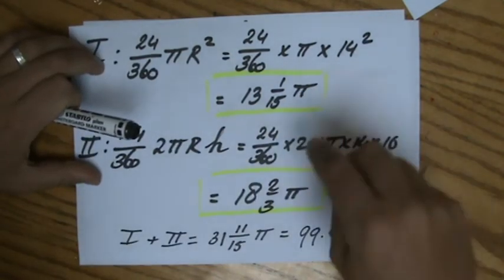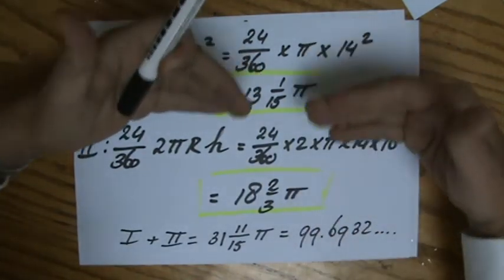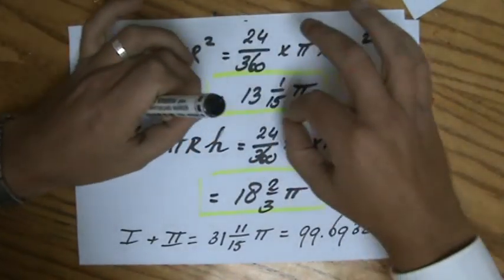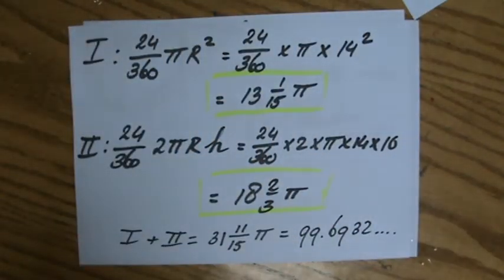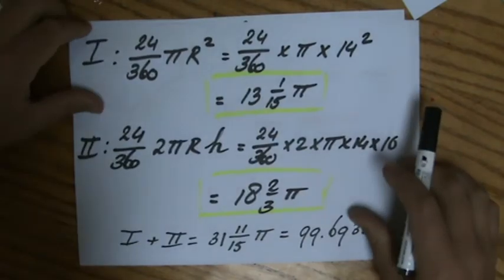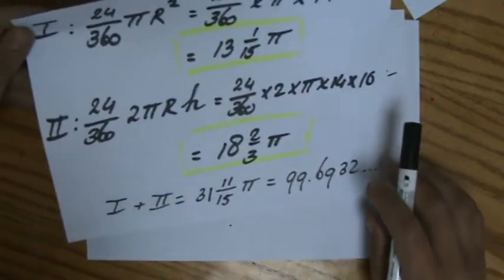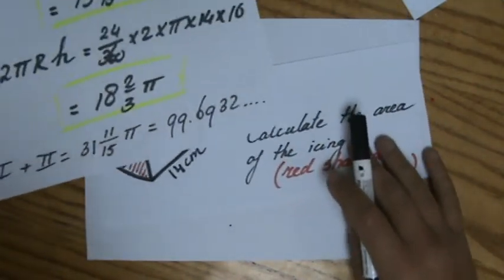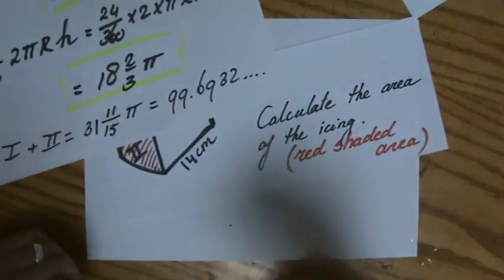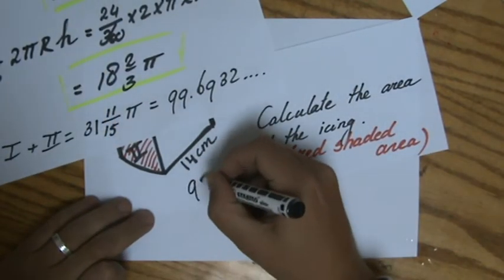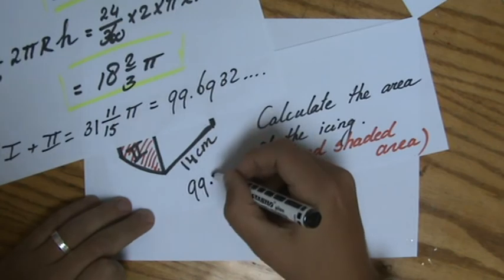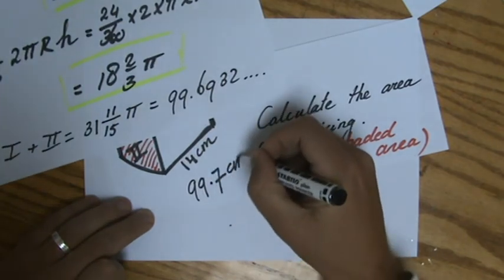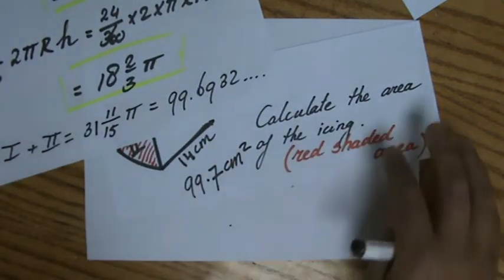If you do that on your calculator, it's going to give you 99.6932 and some more decimals. All non-exact answers I have to round to three significant figures. What is my final answer to three significant figures? 99.7 centimeters squared.